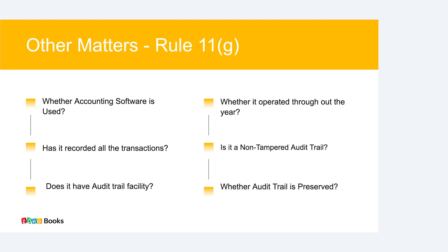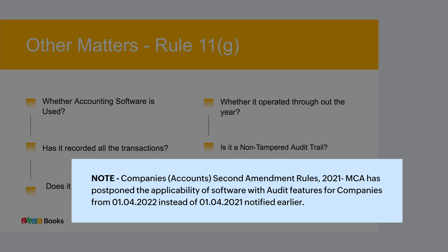Both concepts — e-invoice mandatory from 1st April 2022 for businesses with turnover exceeding 20 crore rupees, and audit trail mandatory from 1st April 2022 for all companies — are critical. Now Vaishali will walk you through a demo of how to generate e-invoices using Zoho Books and how the audit trail feature works in Zoho Books.